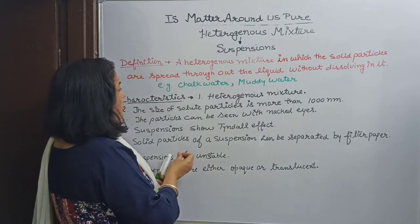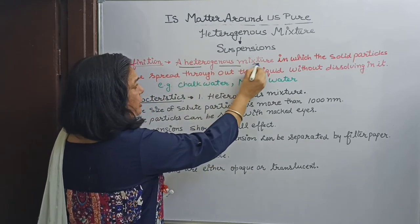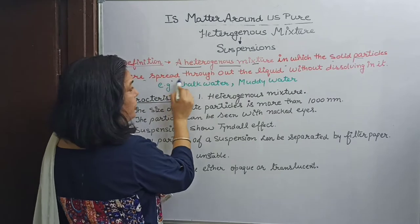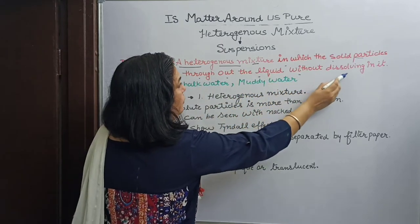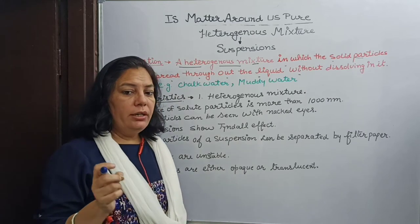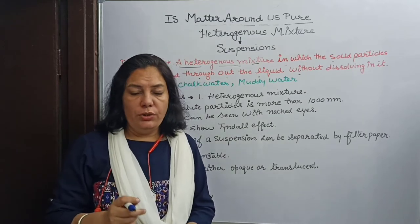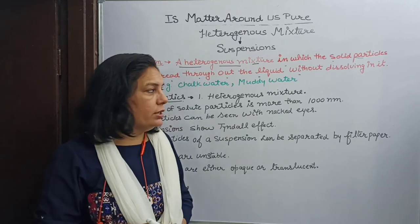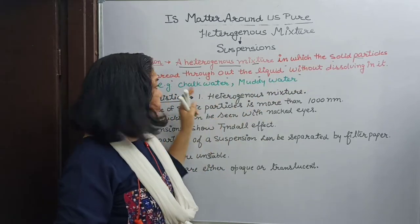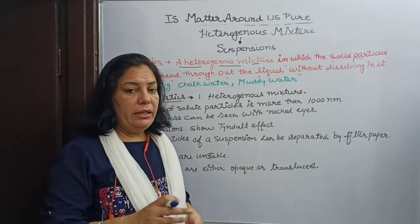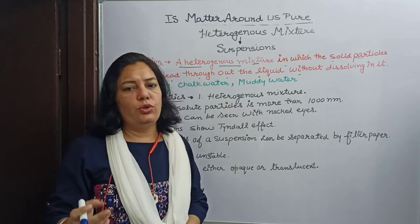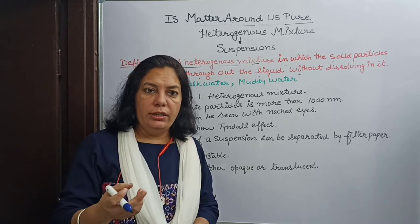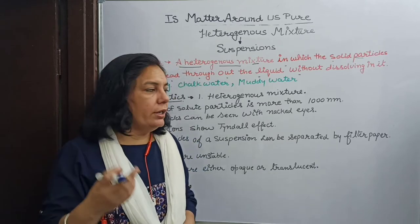Let us define suspension. It is a heterogeneous mixture — meaning non-uniform composition — in which solid particles are spread throughout the liquid without dissolving in it. One component must be in liquid state. The solute is solid in state and the solvent is liquid in state.